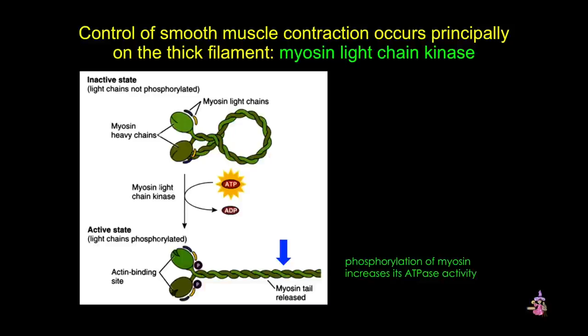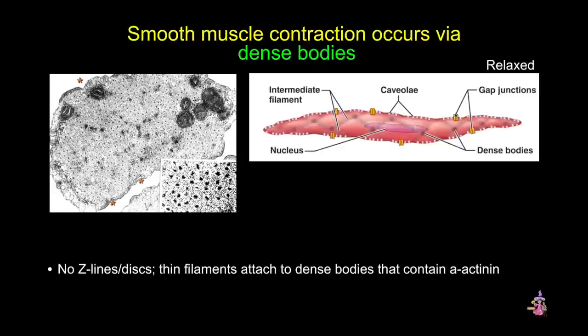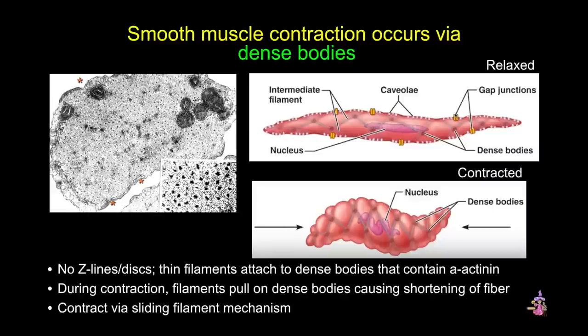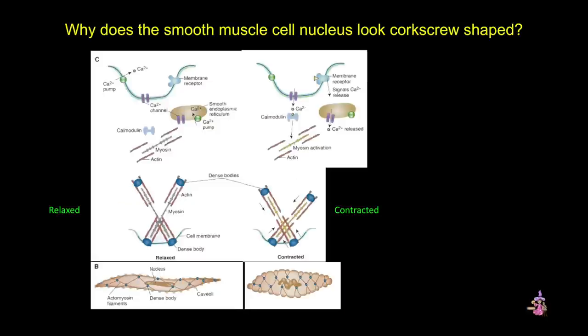How exactly does this cause the cell to contract if there are no sarcomeres? The thin filaments attach to the dense bodies, seen here in the EM picture, which act like Z-discs and contain alpha-actinin. In relaxed muscle, the actin filaments attach to the dense bodies and stretch from one to another — forming an X shape in this cartoon. During contraction, the filaments pull on the dense bodies, which shortens the fiber, explaining why the nucleus is often shaped like a corkscrew. With the influx of calcium, myosin light chain kinase and then myosin are activated, actin slides past the myosin filaments shortening that X shape, pulling on the dense bodies, contracting the cell, and distorting the nucleus.